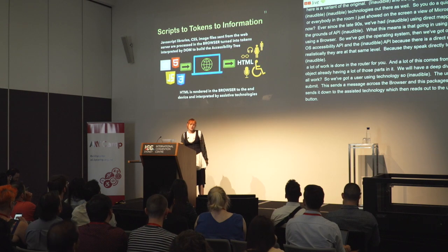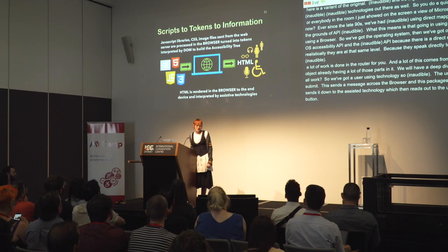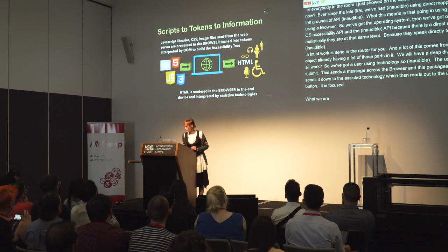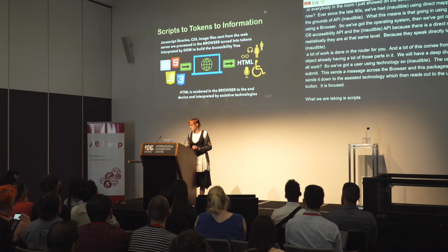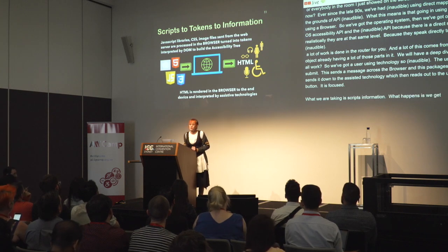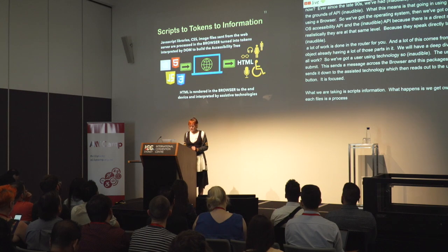Really what we're doing is taking scripts to tokens to information. What happens is we get all our files — JavaScript library, CSS, image files. These are processed by the browser and interpreted by the DOM, and then the DOM builds the accessibility tree, which we'll take a look at.